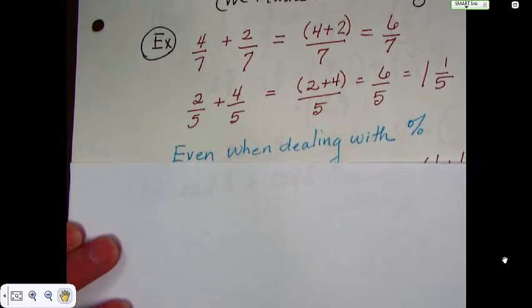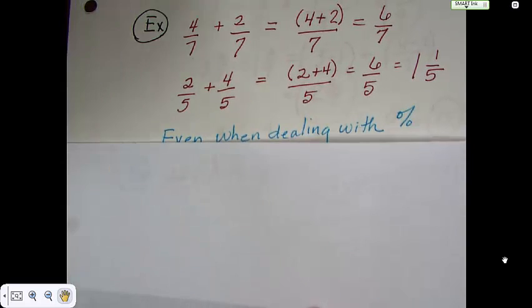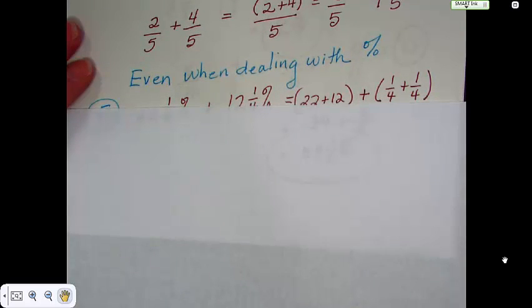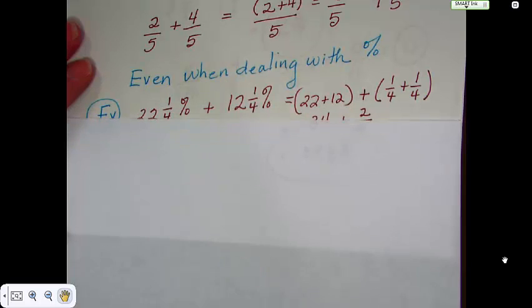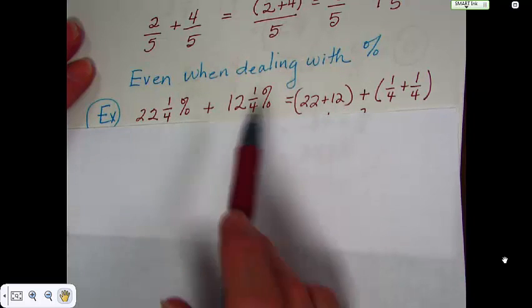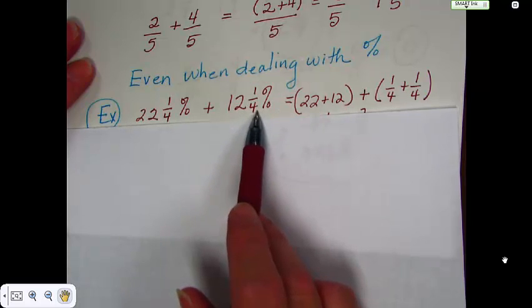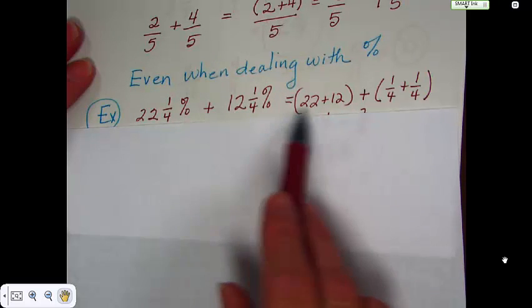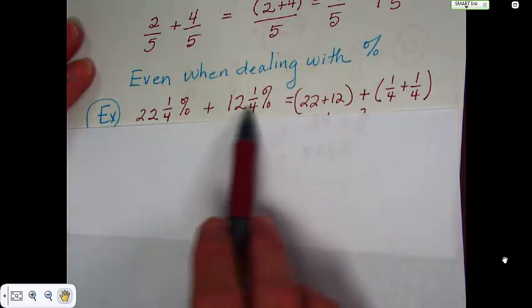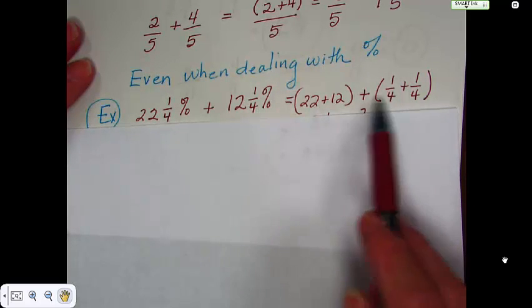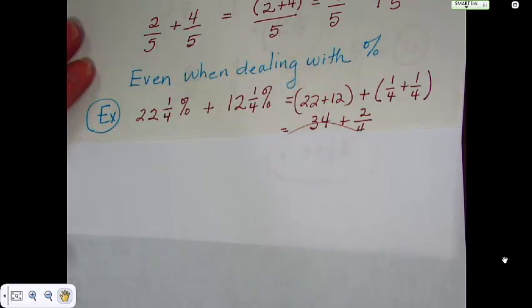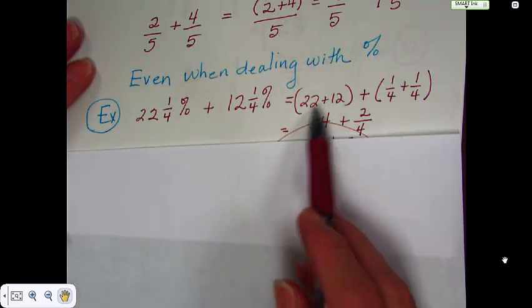Even if you're dealing with percents, even if you're dealing with percents that have fractions, you can still use the same rule. So, we have 22 and 1 fourth percent and we have 12 and 1 fourth percent. Now, we know we can add the 22 and the 12 together because they're whole numbers. But then we also have to add this 1 fourth and 1 fourth. So, that's what we do. We go over here and I separated them out so we can see them a little better.